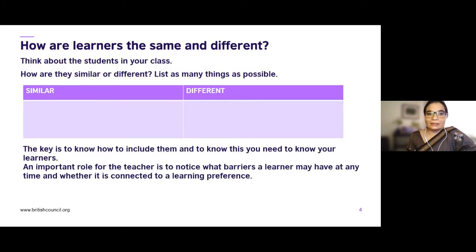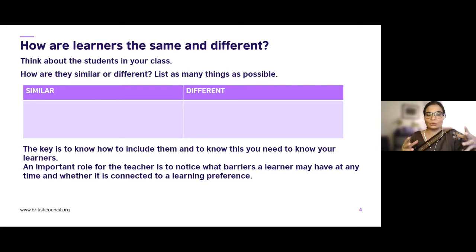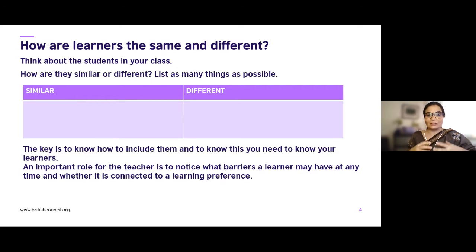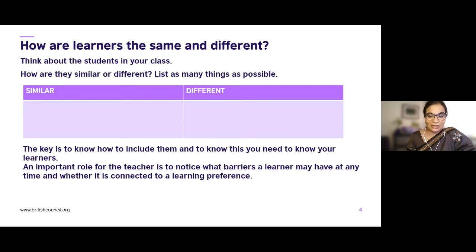How are our learners the same or different? Think about students in your class — how are they similar and how are they different? The key is to know how to include them. Inclusive learning, inclusive education, inclusive teaching is where everybody feels part of the lesson and nobody feels left out. In order to include your learners, you need to know your learners. That is the first step to inclusive teaching and learning — you must know your learners.